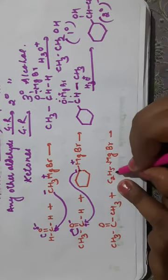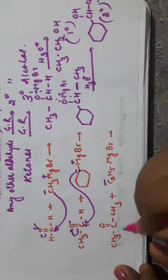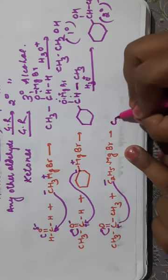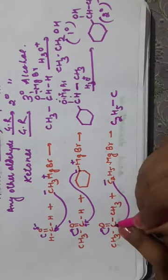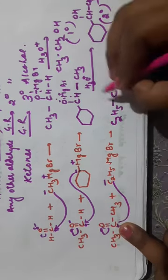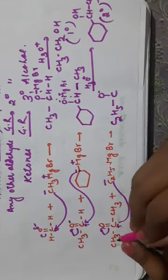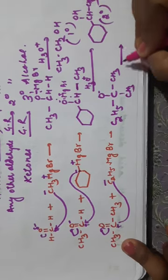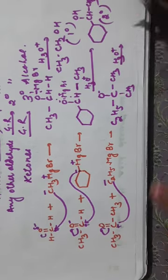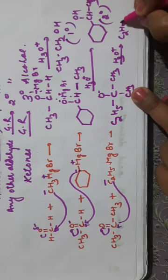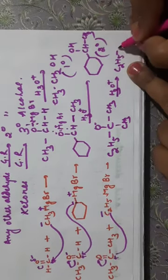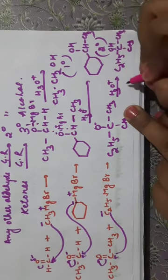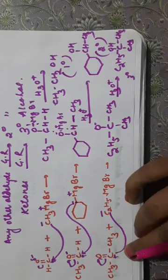Acetone reacted with ethyl magnesium bromide: the negative carbanion attacks the carbonyl carbon of acetone. The alkoxide intermediate formed has C₂H₅, two CH₃ groups, and O⁻MgBr on the central carbon. On hydrolysis it forms C₂H₅–C(OH)(CH₃)₂ — a tertiary alcohol. So starting with a ketone gives a 3° alcohol.